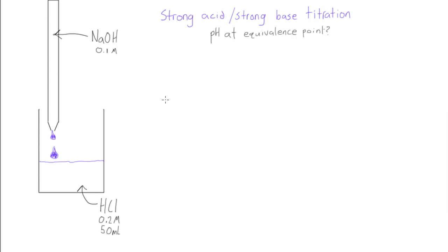First, let's write our chemical equation. We have HCl, we're going to add that with NaOH, and this is going to give us NaCl and water, H2O.